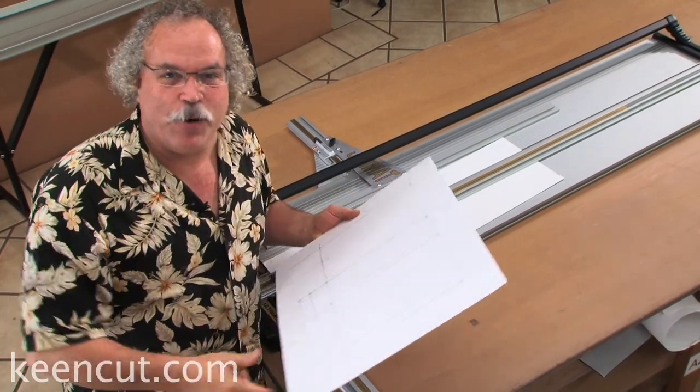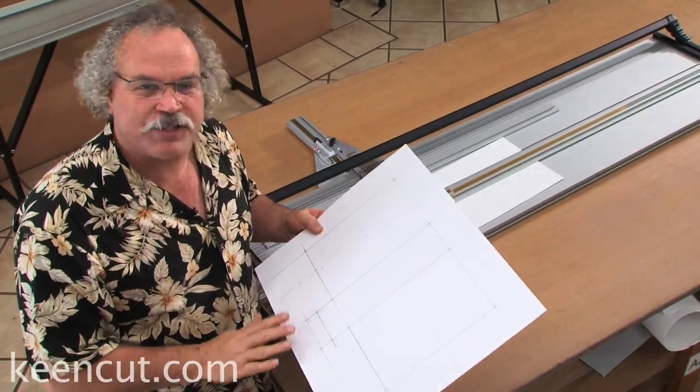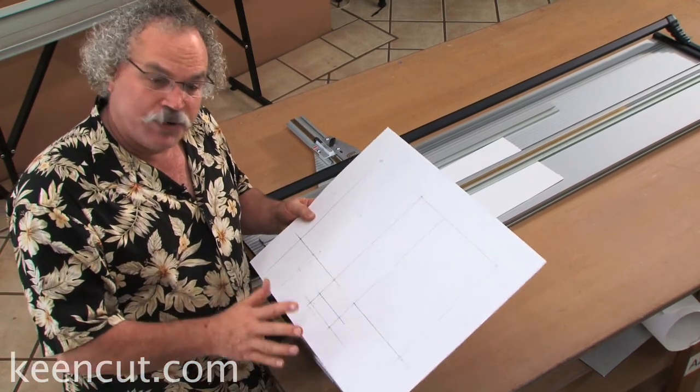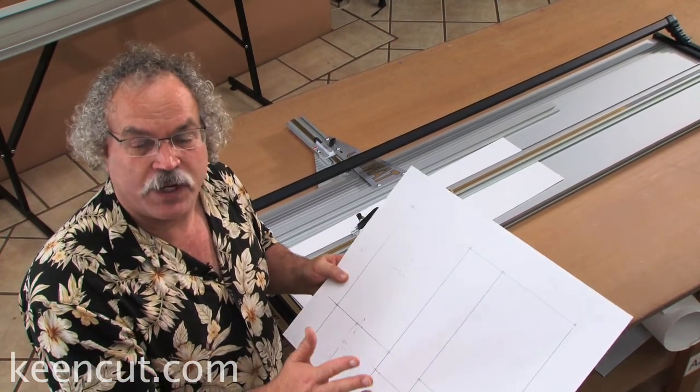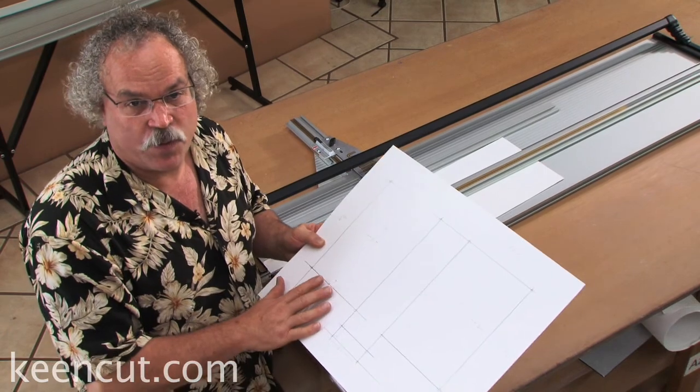Next we're going to do a multi-opening mat. Multi-opening mats are similar to offset mats. You need to take it on the back of your mat and do a complete layout of exactly what you want.